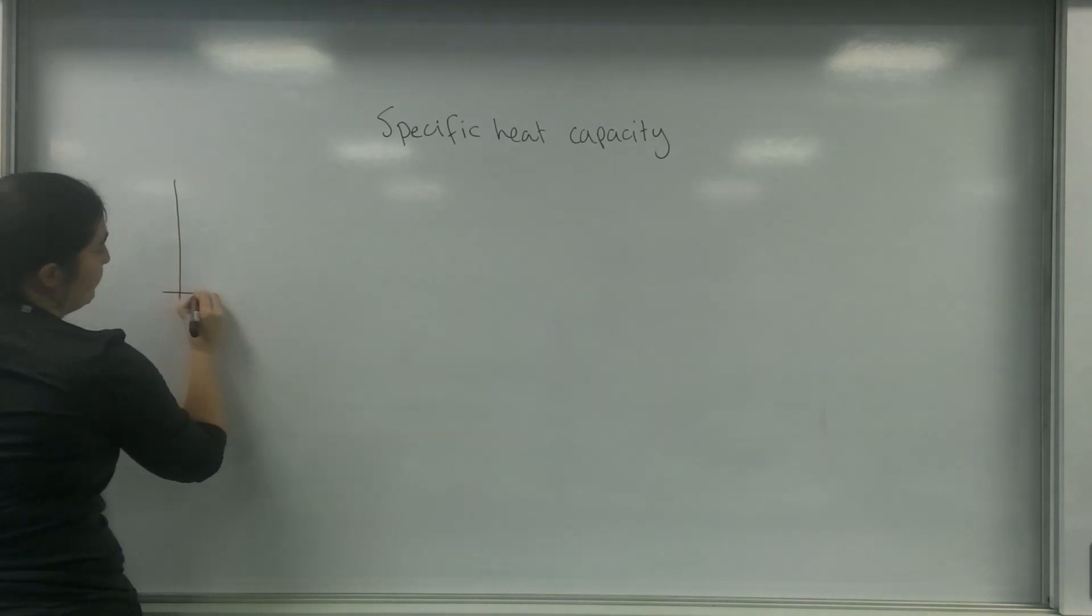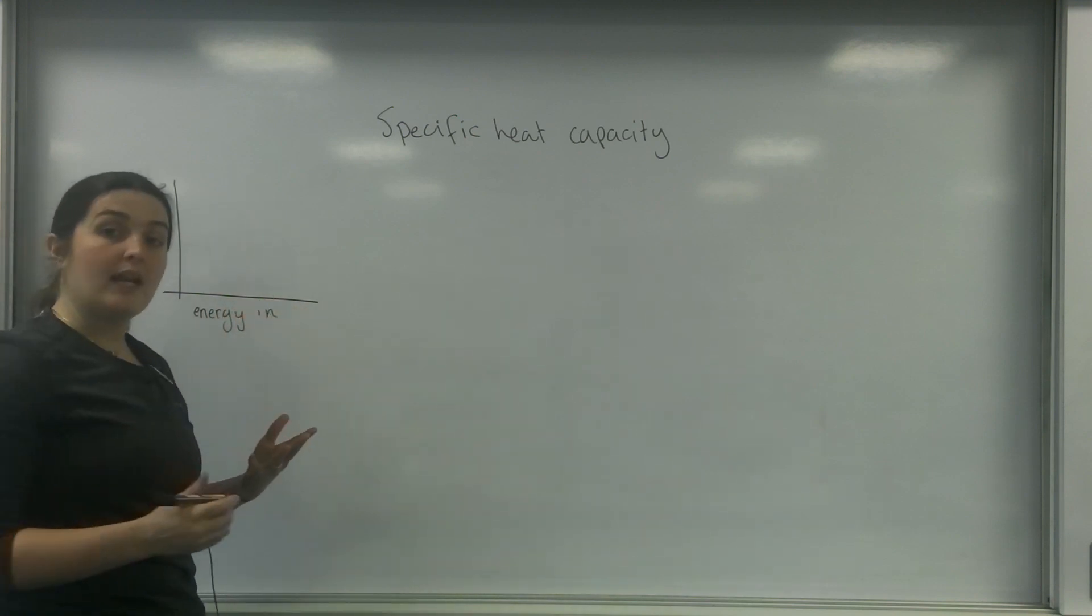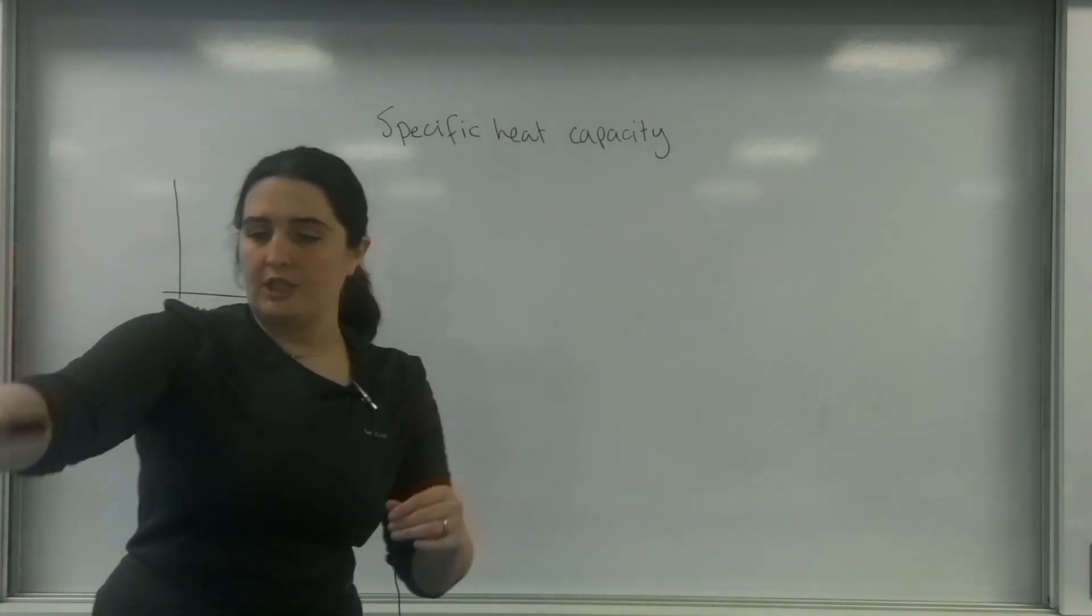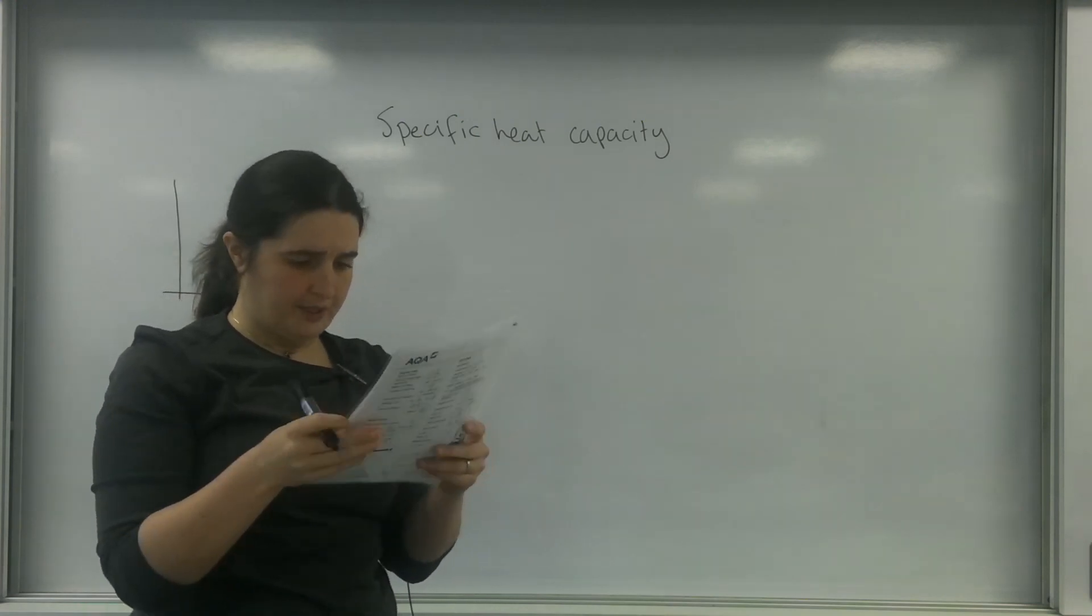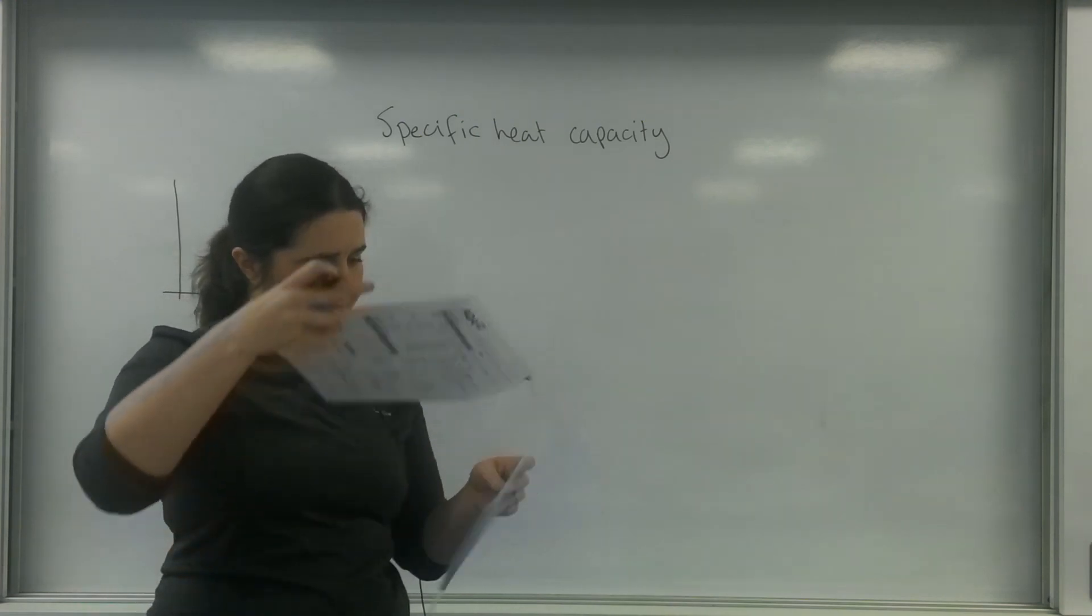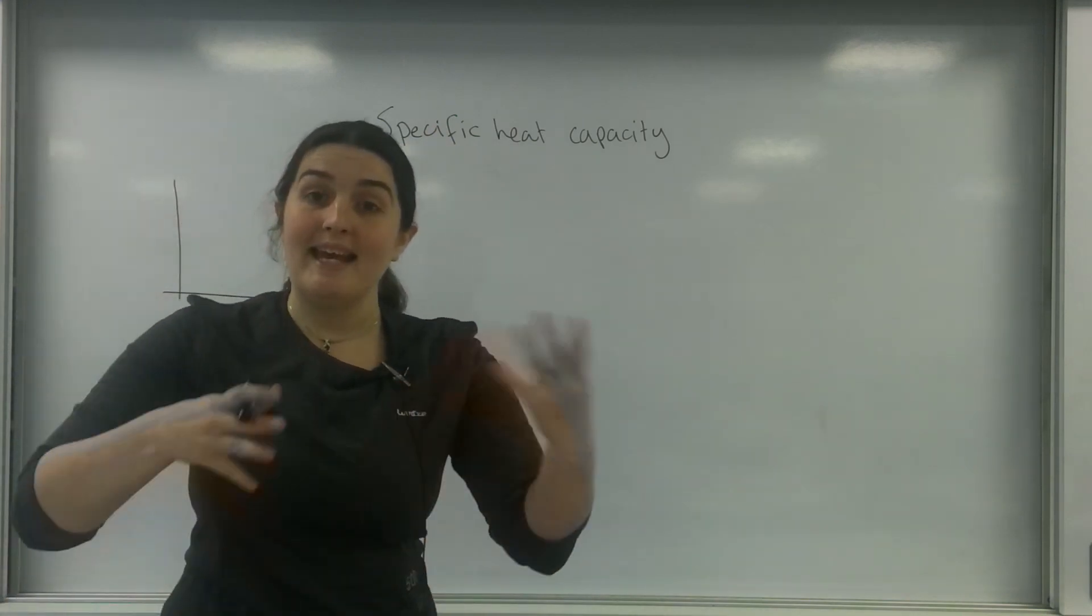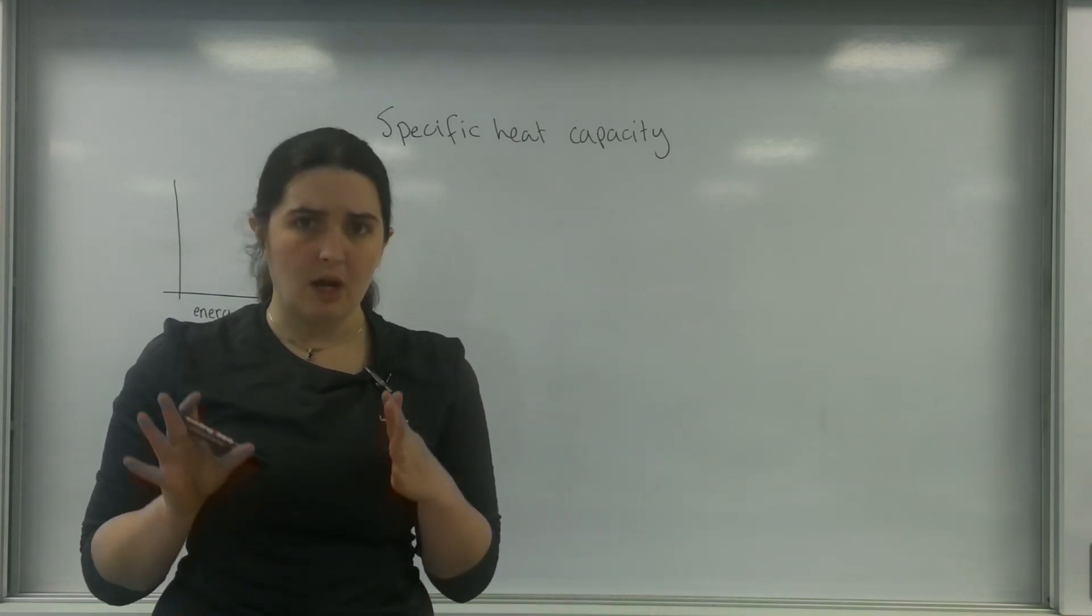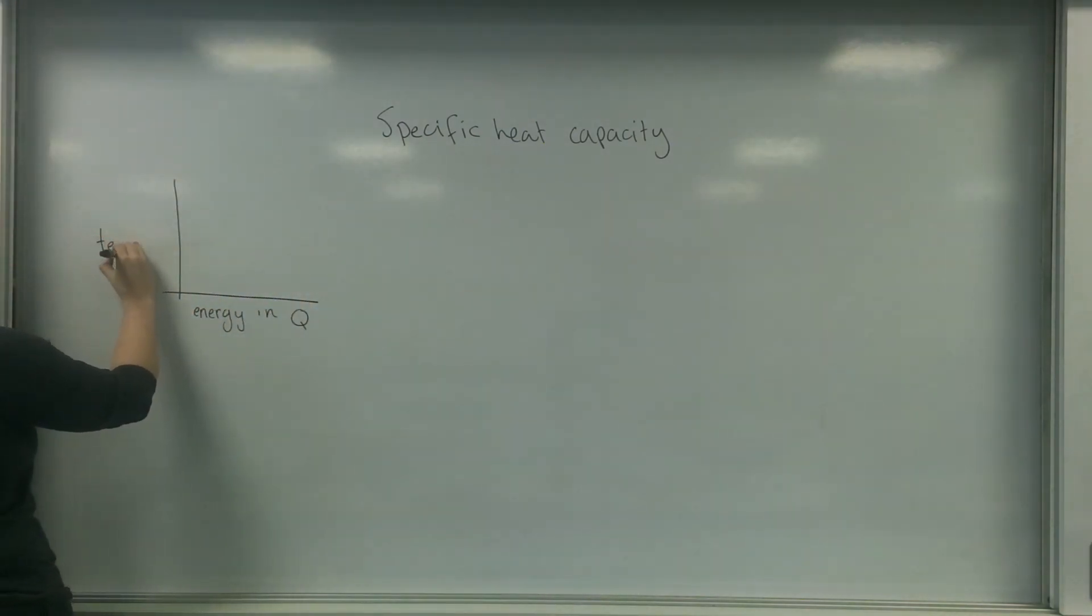I've got a graph here, and this is the energy in. I'm going to use the letter Q here. This Q is on the data sheet - thermal physics - they call it Q. In chemistry it might be E for energy as well. But Q in this idea is energy, and this here is the temperature.